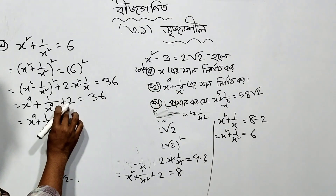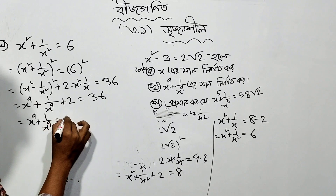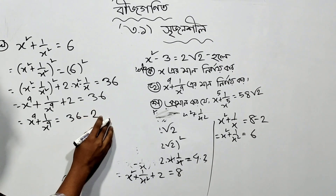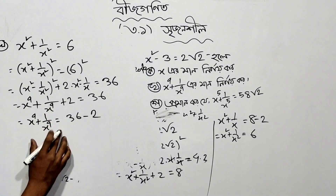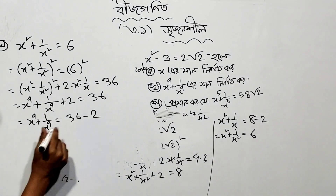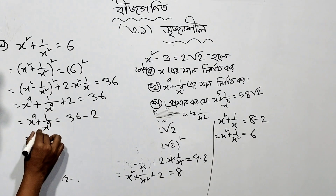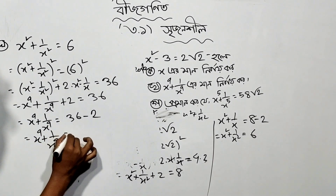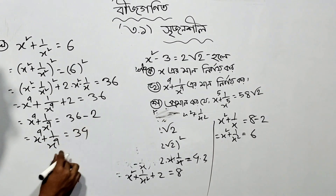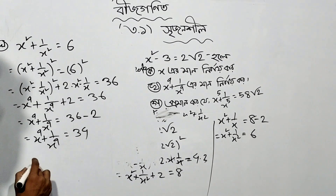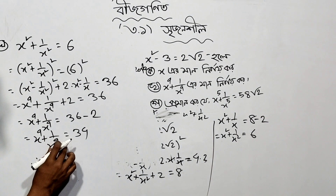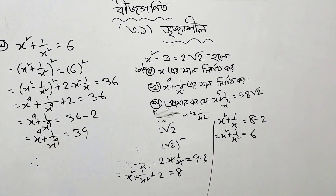x to the power 4 plus 1 by x to the power 4. The formula gives us: a squared minus 2 times x, so x to the power 4 plus 1 by x to the power 4 equals 37 minus 2. Therefore x to the power 4 plus 1 by x to the power 4 equals 34.